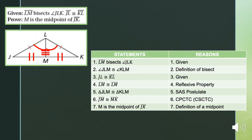For the formal proof: statement one, line segment LM bisects angle JLK — given. By the definition of bisect, angle JLM is congruent to angle KLM. Statement three: line segment JL is congruent to line segment KL — given. Statement four: line segment LM is congruent to line segment LM by reflexive property. Statement five: triangle JLM is congruent to triangle KLM by the SAS (Side-Angle-Side) postulate. And line segment JM is congruent to line segment MK by CPCTC.